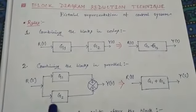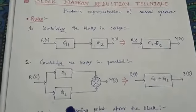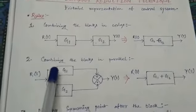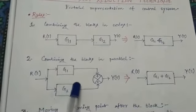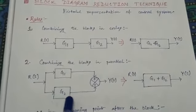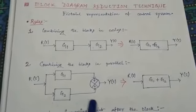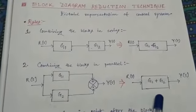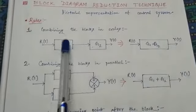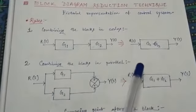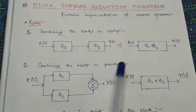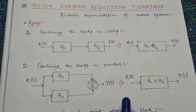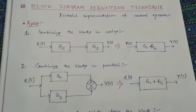Rule number two: combining blocks in parallel. Here two blocks are in parallel connection, and if we combine them the resultant block will be g1 plus g2. So in series connection there is simple multiplication, and in parallel connection there is simple addition.